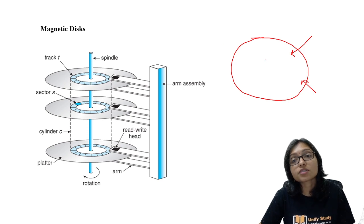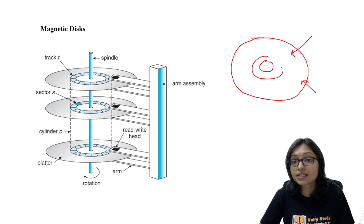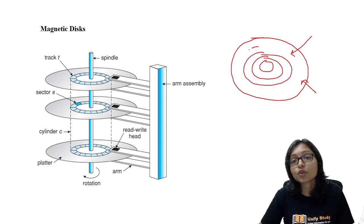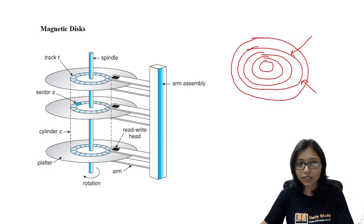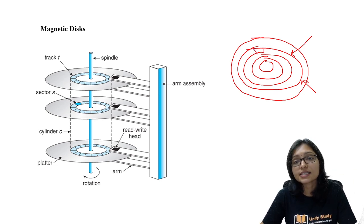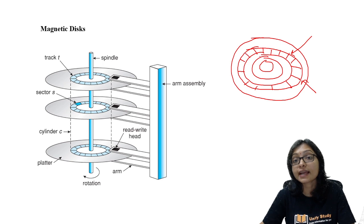There are some tracks. What is called a track? These circles are the tracks — just like when a running race is going on, there are some lanes; those are the tracks. What is a sector? Each and every track is divided into some small parts, like this. These are called sectors.